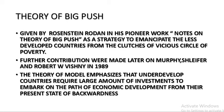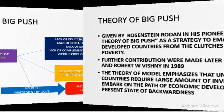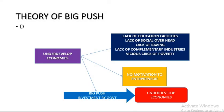The Theory of Big Push is given by Rosenstein-Rodan in his pioneering work. Underdeveloped economies are caught in the vicious circle of poverty because there is a lack of educational facilities, so labor is not equipped. There is a lack of social overheads, lack of savings, and lack of complementary industries. The individual entrepreneur gets no motivation to invest, so government needs to give a big push and make large-scale investment to start the economic development process.